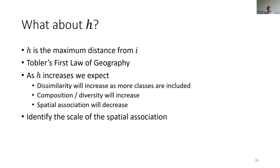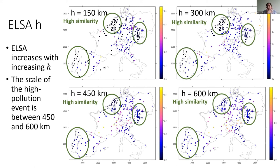Finally, a note about H. All these statistics have been calculated with an H of 150 kilometres. Thinking of Tobler's first law of geography, as H increases, dissimilarity will increase, diversity will increase, and spatial association will tend to decrease. We might want to identify the scale of spatial association. Trying this with increasing H, we still identify the strong clusters over Portugal, western Spain, Belgium, and the Netherlands. However, those low values of the ELSA statistic start to increase as we increase H. The scale of this event over the Netherlands and Germany appears to be somewhere between 450 and 600 kilometres.